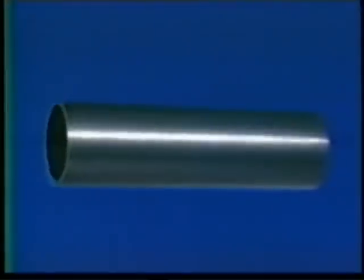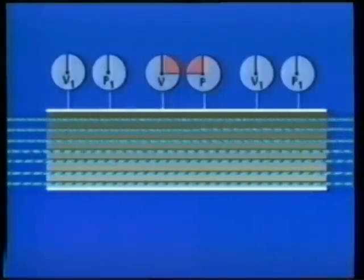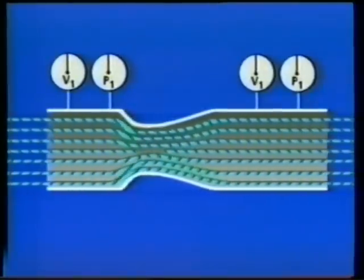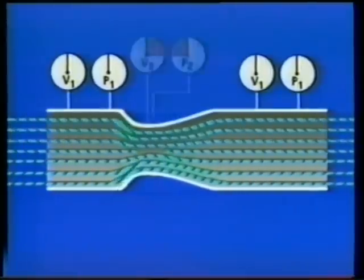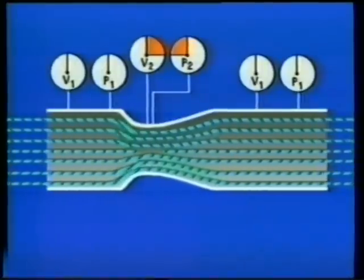The principle behind lift was discovered by a Swiss physicist named Bernoulli when he observed what happened to air as it passed through a tube. The principle simply states that as the velocity of a fluid or gas increases, its pressure decreases. He also found that with a constant velocity, the pressure of the air remains the same at both ends of the tube. If a constriction is placed in the middle of the tube, the same amount of air has to go through a smaller area, which increases the velocity and decreases the pressure.